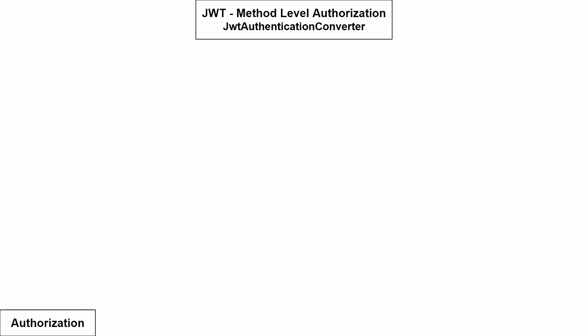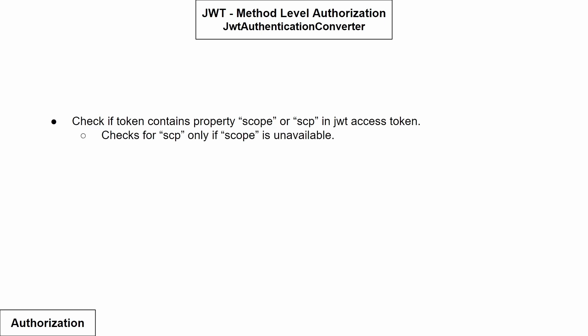When the access token is received in the Spring Boot application, it checks if the incoming access token has the property named 'scope' or 'scp'. It checks 'scp' only if the property 'scope' is not available. If you have both properties, the 'scp' property is ignored and it processes the 'scope' property instead.